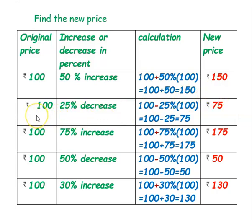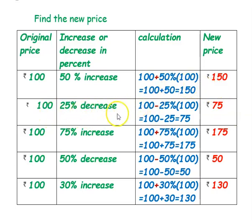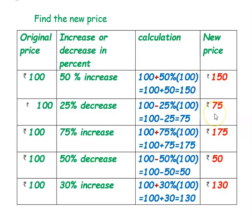The next question: ₹100 is the original price and the percent is 25% decrease. Decrease means we subtract from the original price. So, 25% of 100 is 25. Therefore, 100 minus 25 equals ₹75. The new price is ₹75.